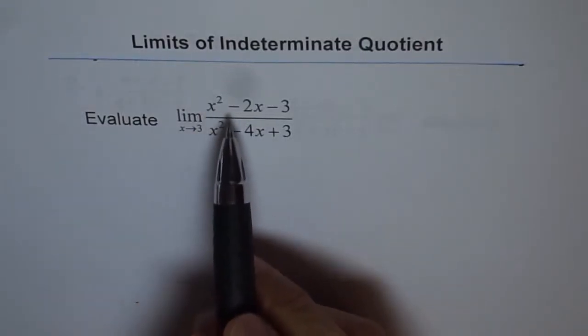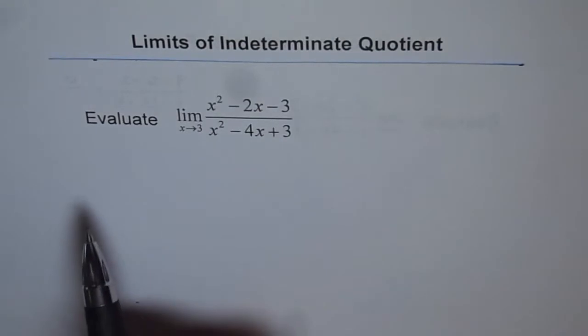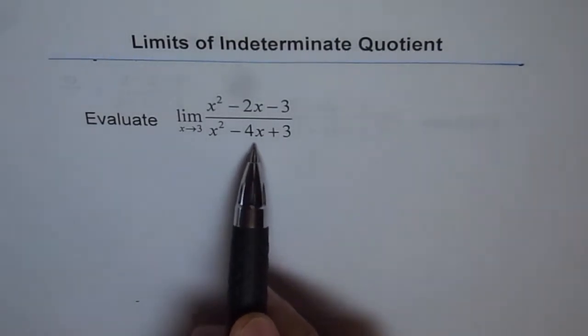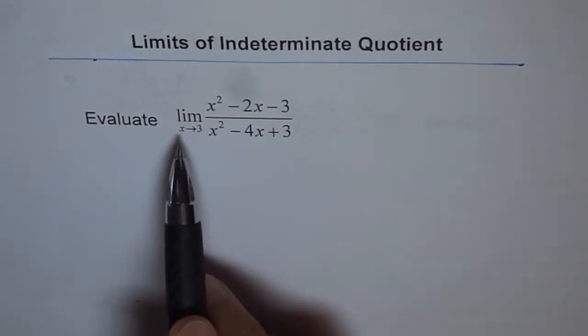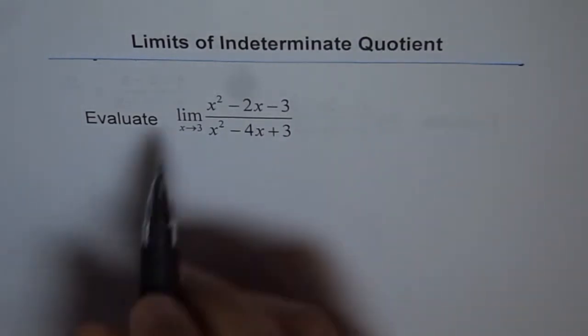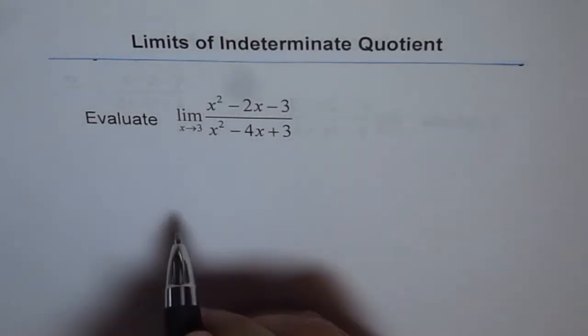Evaluate the limit for x squared minus 2x minus 3 divided by x squared minus 4x plus 3, where x approaches 3. So let's substitute 3 here and see what we get.